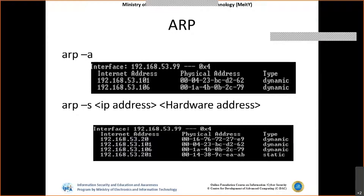ARP -a is used to list out all the available mappings of IP as well as MAC addresses. If there is any specific need to add a static IP, then we can use the command ARP -s along with the IP address as well as the MAC address mapping.